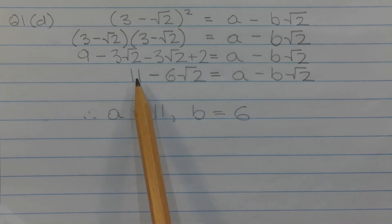So a represents the rational term 11, and b represents this term here, which is the coefficient of root 2, which is 6. Therefore, a equals 11, and b equals 6.